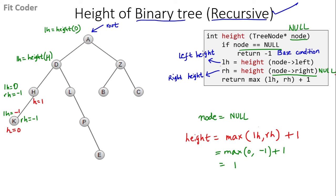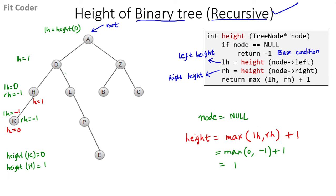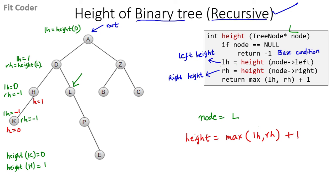Now at D, the left height is set to 1 (height of H). To calculate D's right height, we pass D's right child L to the height function. At L, the left child is null, so the left height at L is -1. The right height at L is height of P.